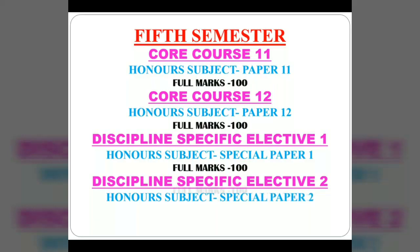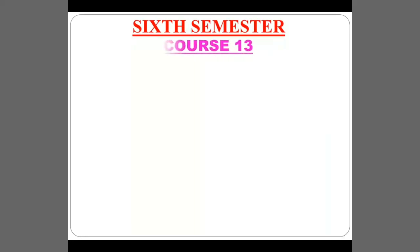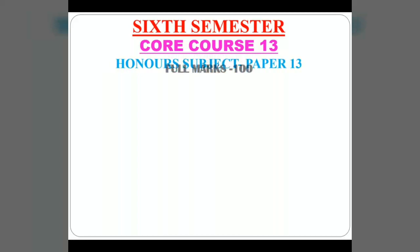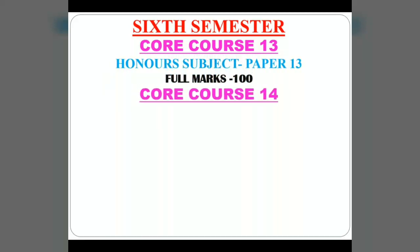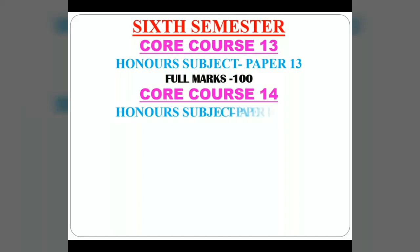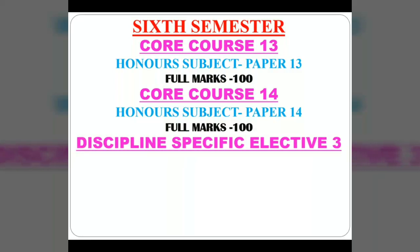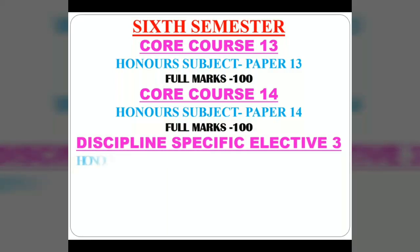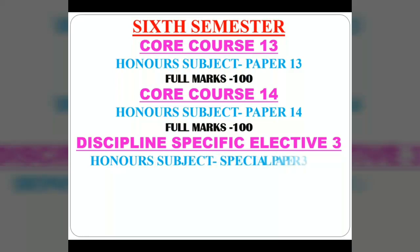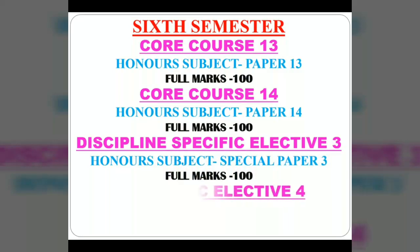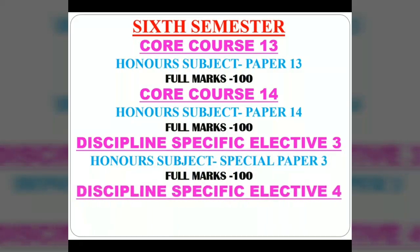In the final sixth semester, there are core course 13, an honours paper with full marks 100; core course 14, another honours subject paper with full marks 100; discipline specific elective 3, a special paper of the honours subject with full marks 100; and discipline specific elective 4, the final honours subject special paper with full marks 100.